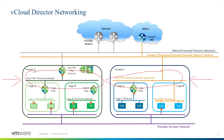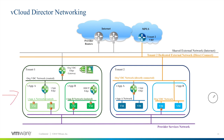A third type of organization network exists: the isolated. An isolated network means the organization network is not connected to an external network and is only available inside the virtual data center. vApp networks are entirely configured by the consumer and exist to provide network access for vApps. They are the same as private internal networks. Multiple vApps can communicate with each other by connecting to organization networks.